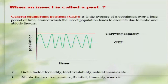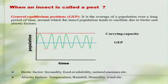If you look at this graph, the insect population will increase for some time, and later it decreases, comes down, again it increases, and then comes down. Like this, the population will be fluctuating over a period of time. Why does this fluctuation happen?